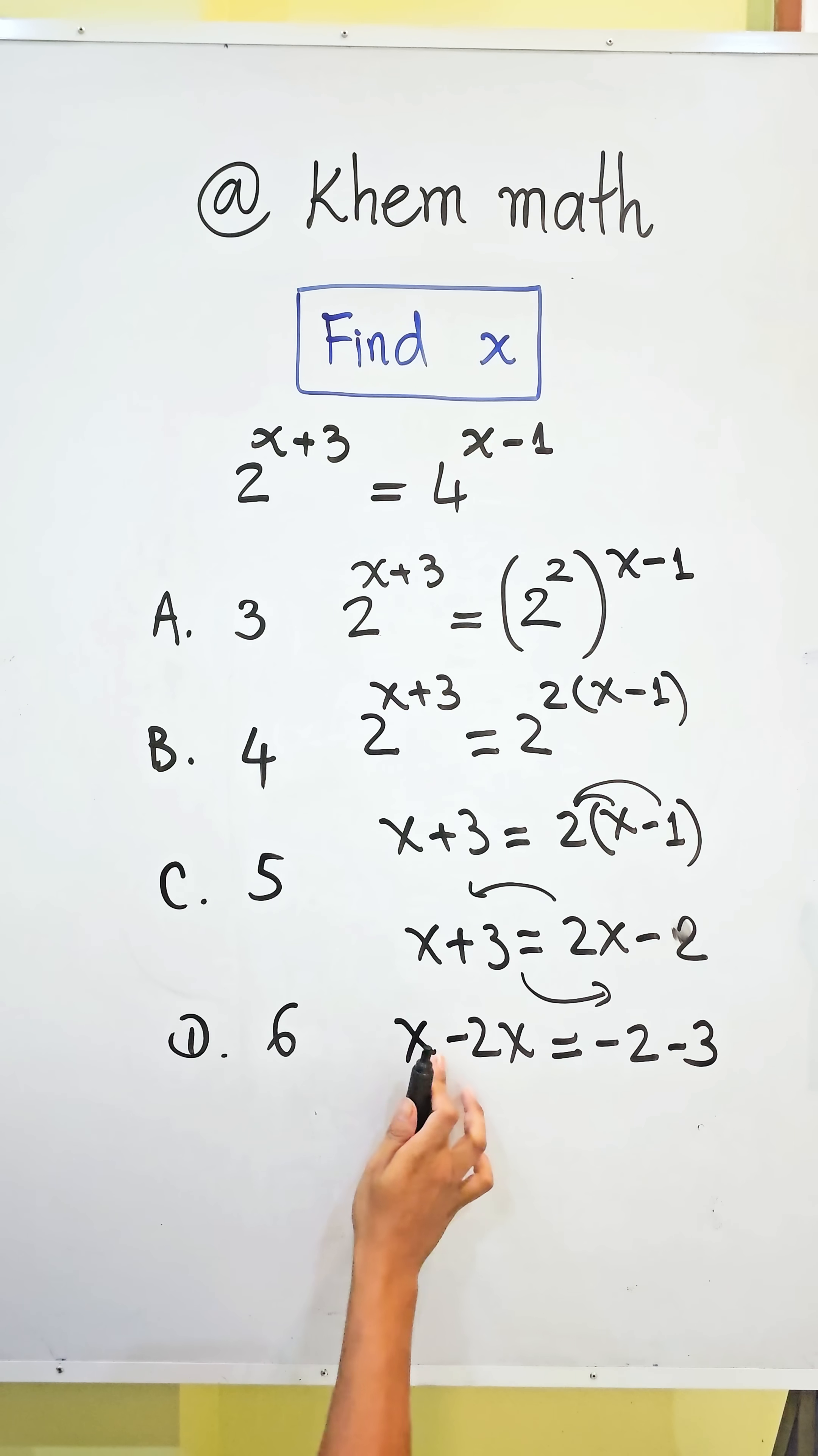So we get x minus 2x equal to negative 2 minus 3, we get negative 5. And we simplify negatives, so we get x equal to 5.